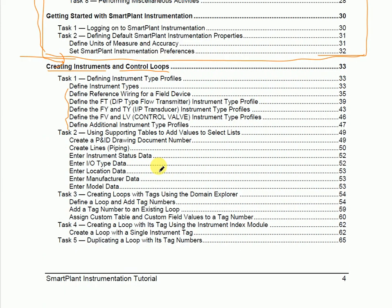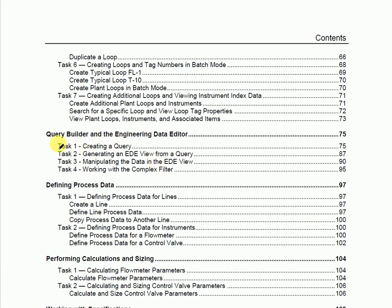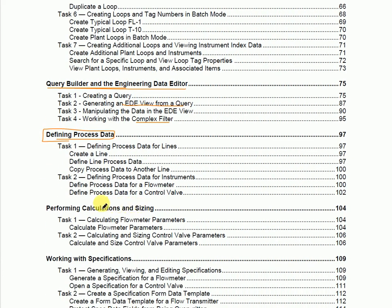These loops are also very important when starting work on InTools user modules. After that we go for the Query Builder and Engineering Data Editor. If we need to edit any form or edit any EDD view, this is applicable. The Process Data module is also available, in which we define the process data for the type of instruments. We can create or input process data into the InTools process data module.